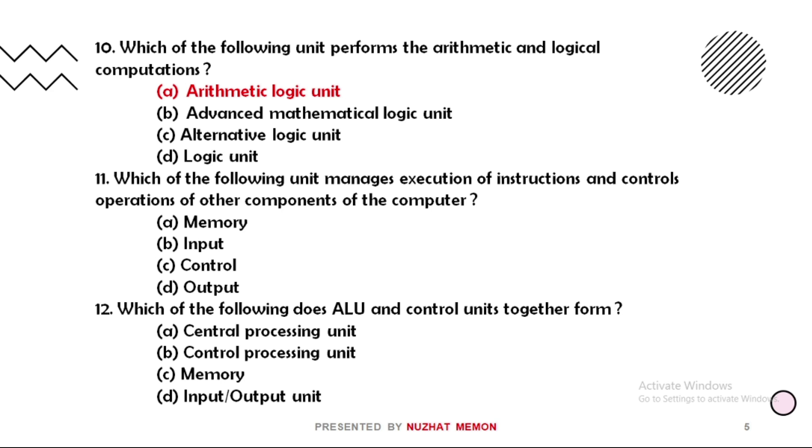Eleven: which of the following unit manages execution of instructions and controls operations of other components of the computer? The correct option is option C, that is control. Twelve: which of the following does ALU and control units together form? The correct option is option A, that is central processing unit.